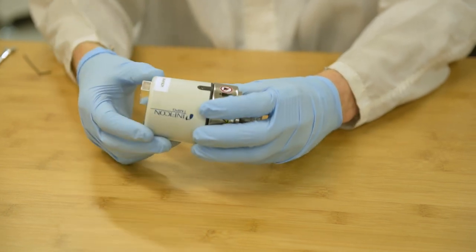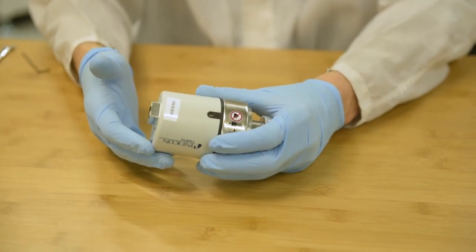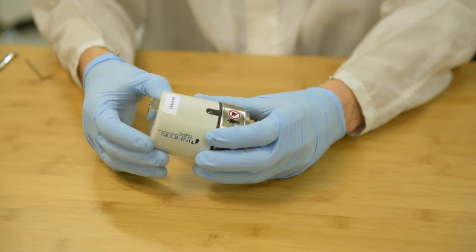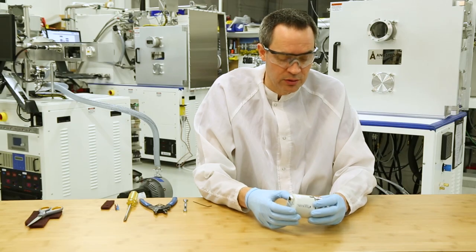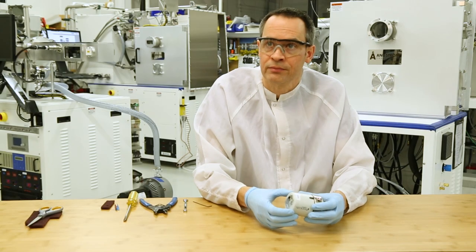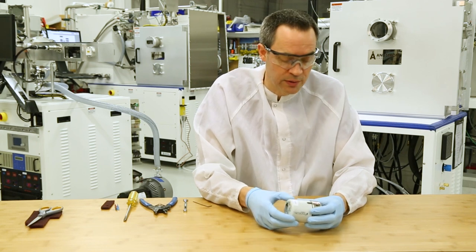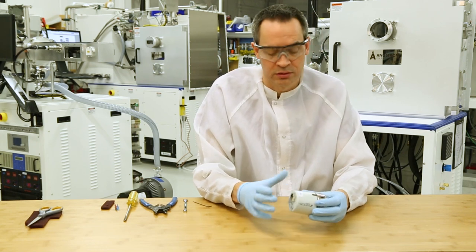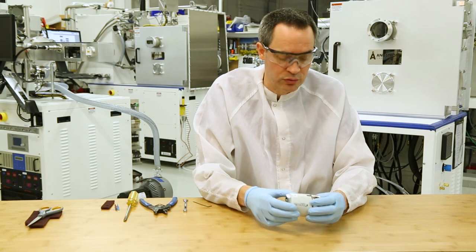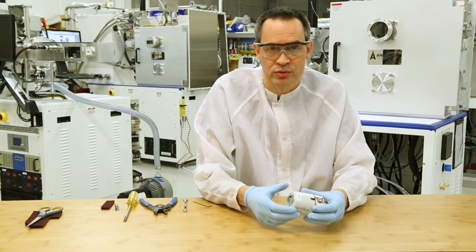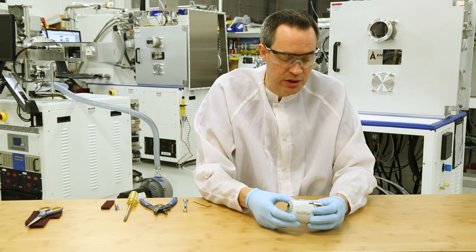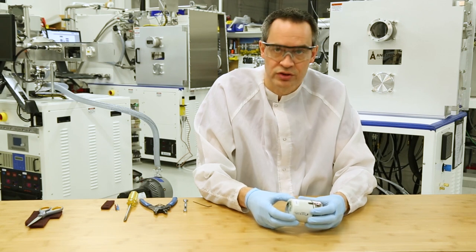The gauge we're cleaning today is a cold cathode combination gauge. So there's actually two gauges here: there's a pirani or convection style gauge that measures pressure down to the minus three or minus four millitorr range, and then the gauge changes over to the cold cathode side and measures pressures down into the minus nine range if the pressure in the chamber goes that low.